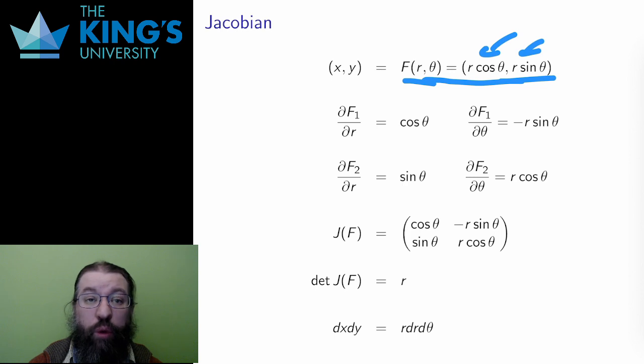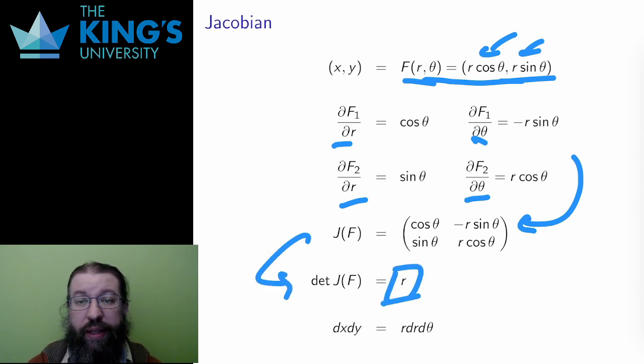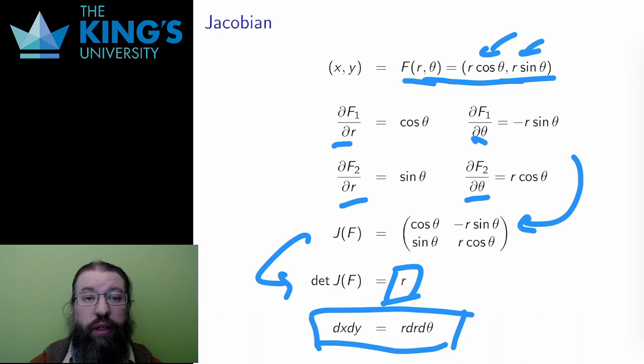I take all four partial derivatives, in R and in theta, the two variables of polar coordinates. Then I put these into the matrix of partial derivatives, and calculate the determinant. I get a sine squared plus cos squared in this determinant, which I haven't shown the calculation of, but the result is just R, as sine squared plus cos squared simplifies to 1. Therefore, the change of variables replacement is that dx, dy will be replaced with R, dr, dtheta.